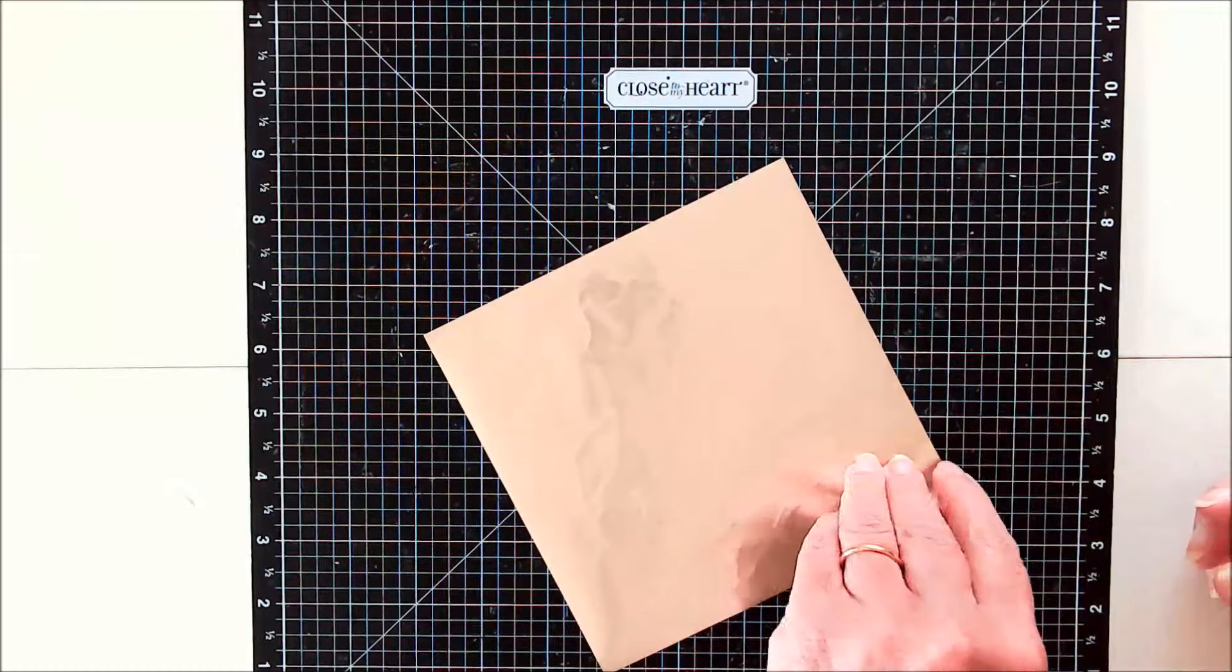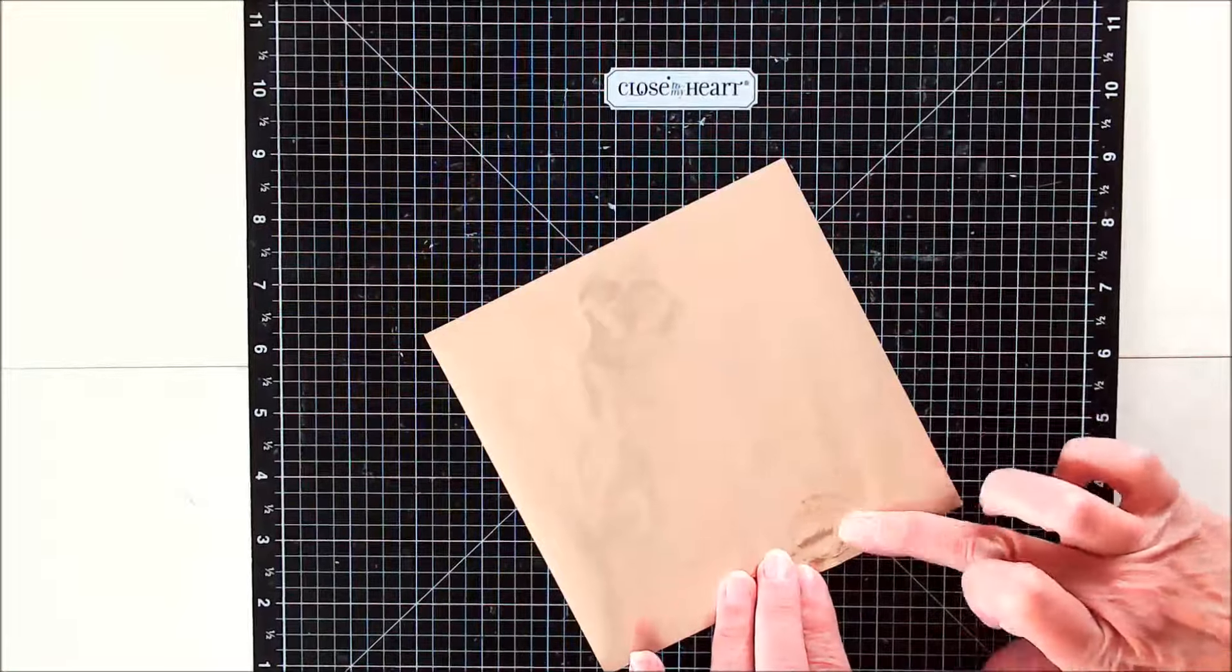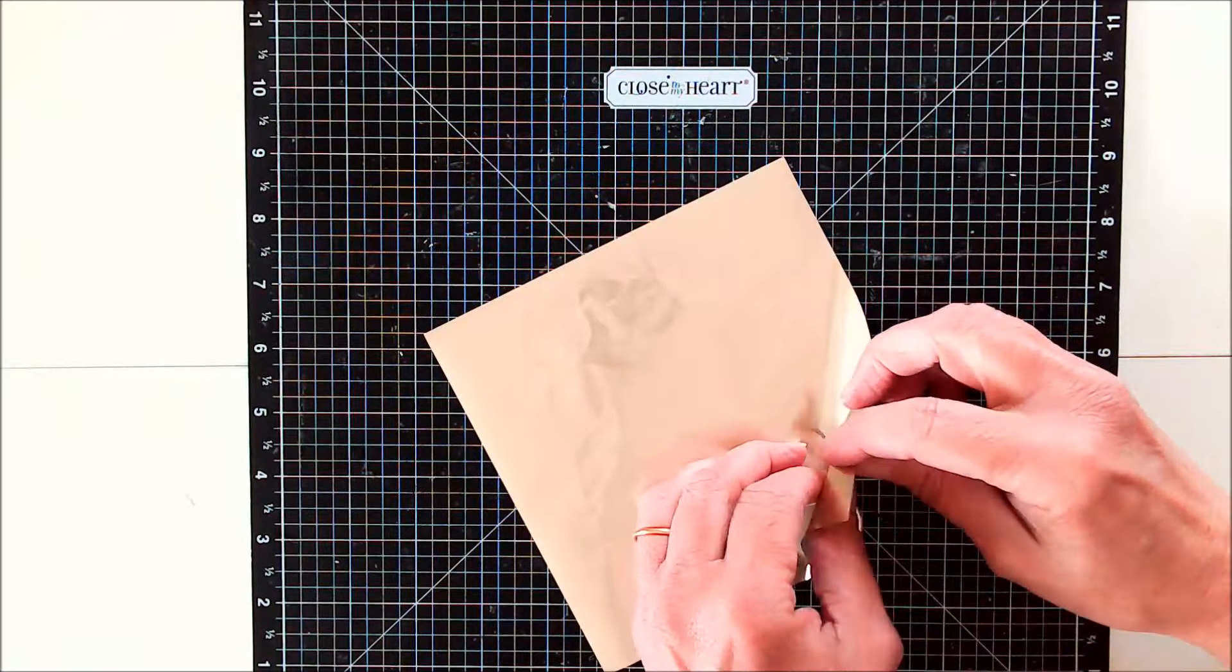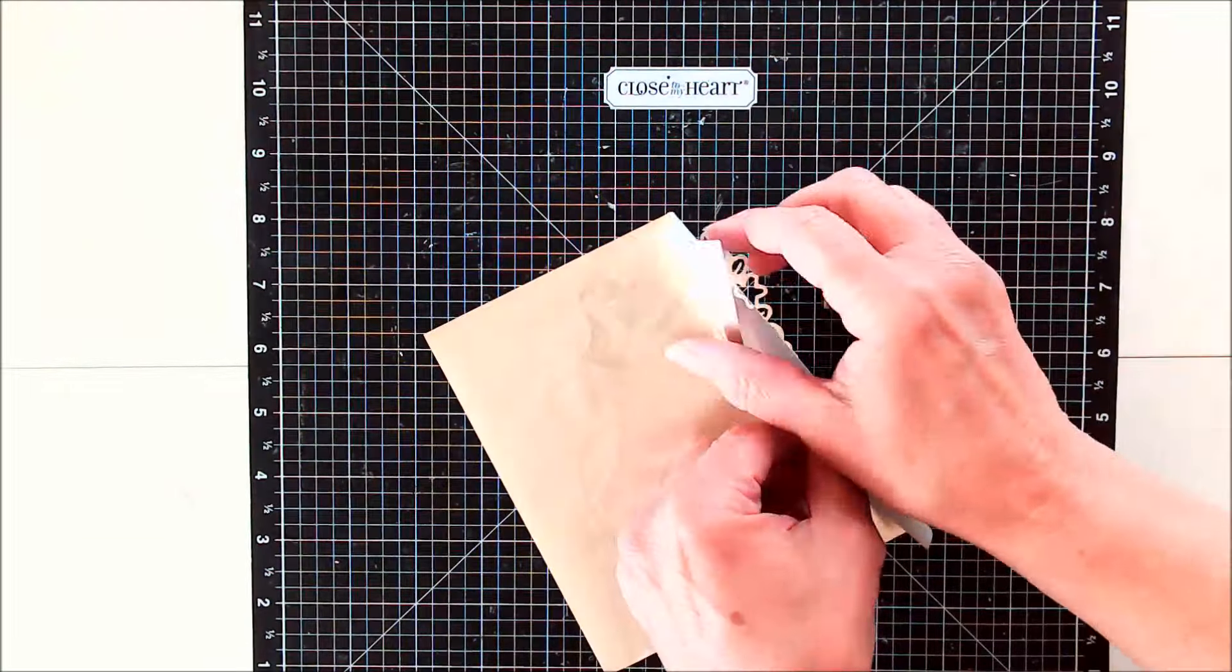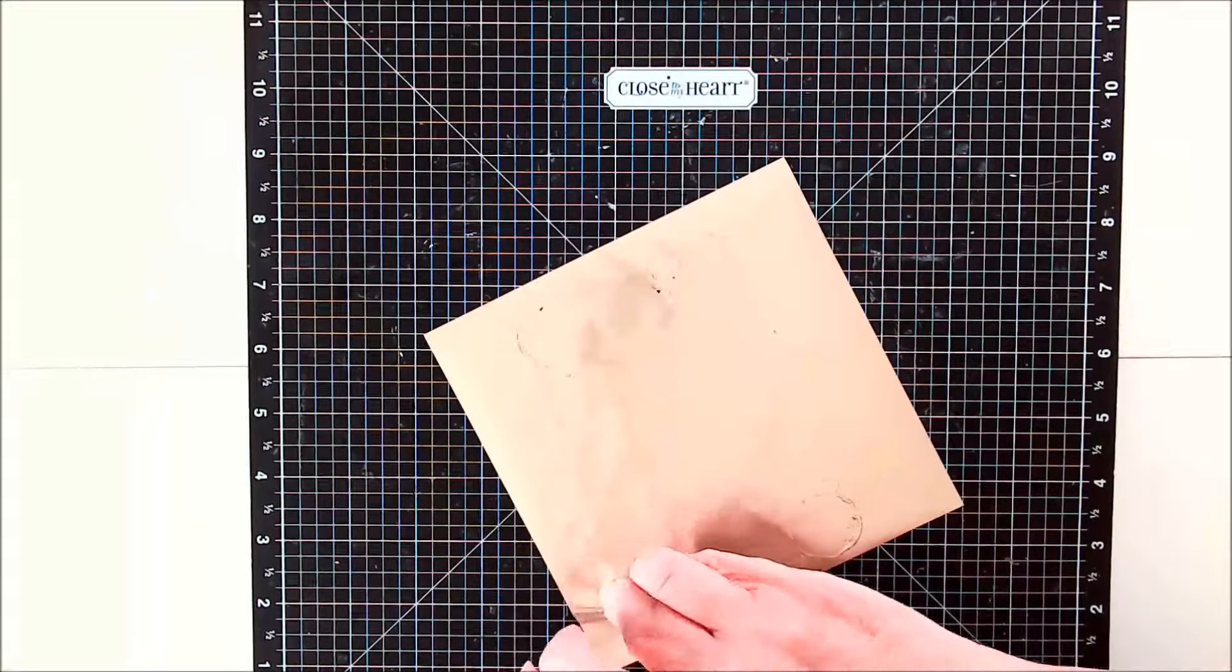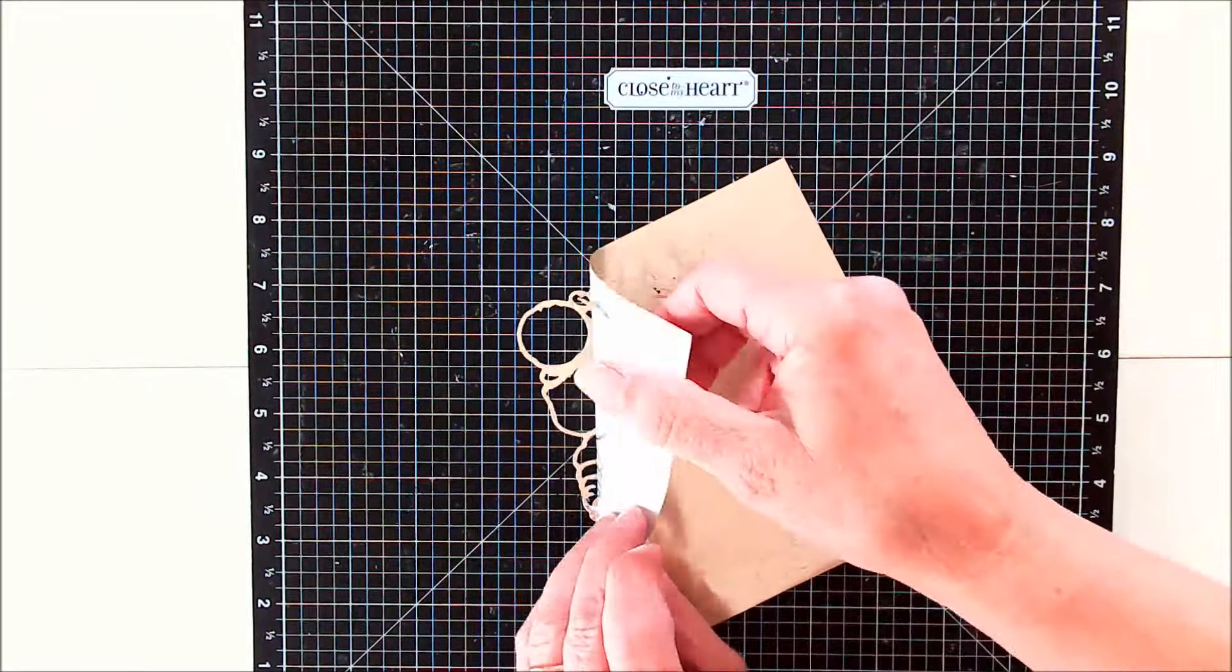One of the signs that it's making complete contact is when you can start seeing the shape of the item that you're putting the foil on. And I'd like to point out that this works with any transfer foil, and I will link my videos on the end of the screen of this video so that you can learn more foiling techniques that do not require a machine.